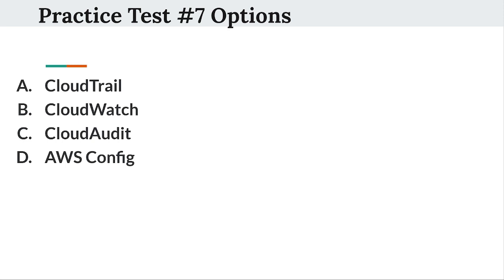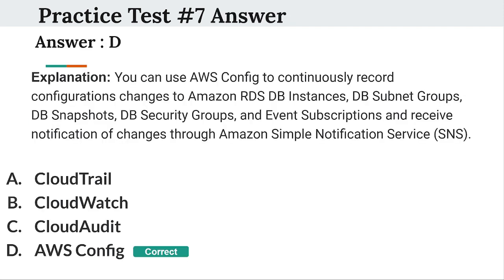Please select your answer in the next 5 seconds. So the right answer is option D. You can use AWS Config to continuously record configuration changes to Amazon RDS DB instances, DB subnet groups, DB snapshots, DB security groups, and event subscriptions, and receive notification of changes through Amazon Simple Notification Service (SNS). Let's move to the next question.